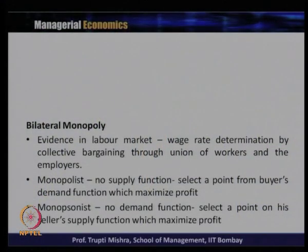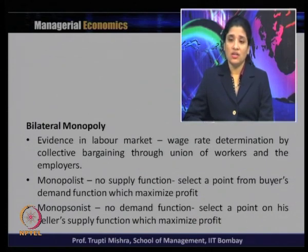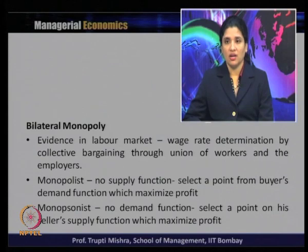We generally find evidence of bilateral monopoly in the case of a labor market, because that is where we can organize into a monopsony buyer and a monopolist seller. Wage rate determination in this case is done by collective bargaining through the union of workers and the employer. It is not strictly on the basis of demand and supply, because there is a single seller and single buyer. If someone has more bargaining strength, they generally influence the price or wage rate more.